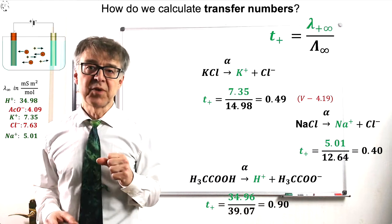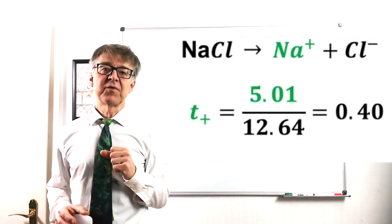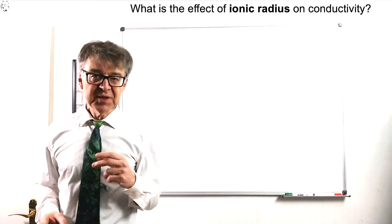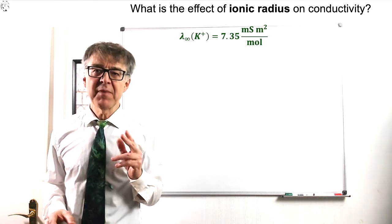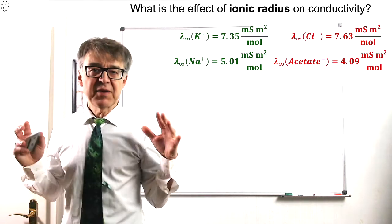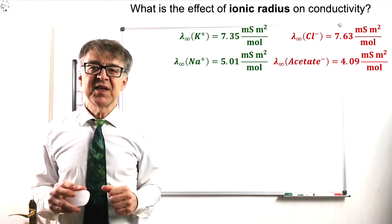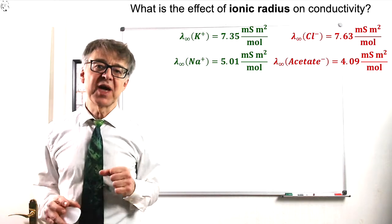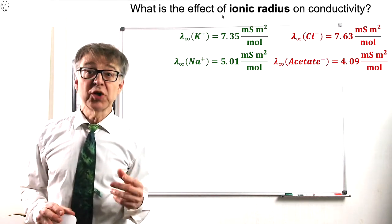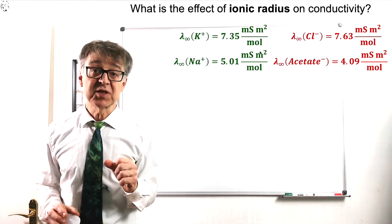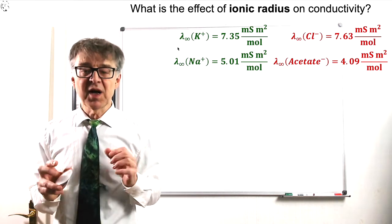T sub plus being 0.4 correspondingly. The limit conductivity of an ion primarily depends on its hydrodynamic radius, that is its size including the hydration shell. Potassium ions do conduct better than sodium ions, because potassium ions have a smaller hydration shell.